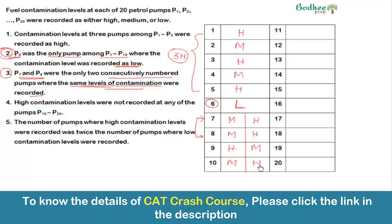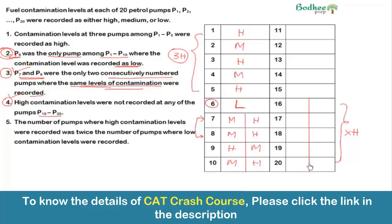Condition four says high contamination was not recorded at any pump from P16 to P20, so those five pumps are filled with only low or medium. Combining with condition three — no two consecutive pumps can have the same level — if P16 starts with M the pattern is M, L, M, L, M, and if it starts with L the pattern is L, M, L, M, L.